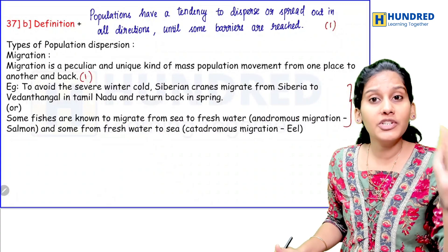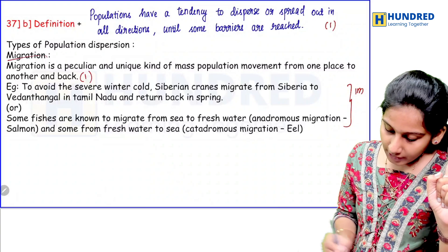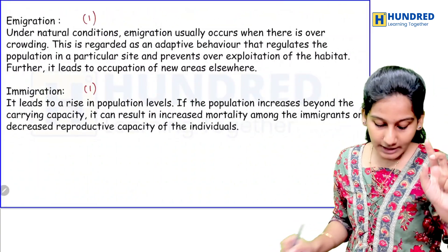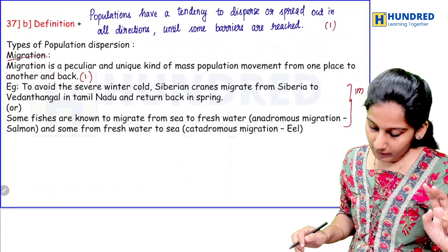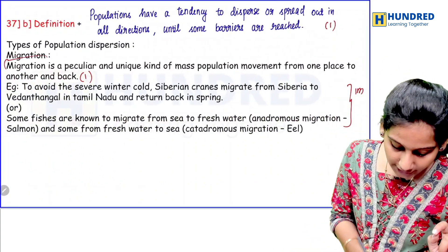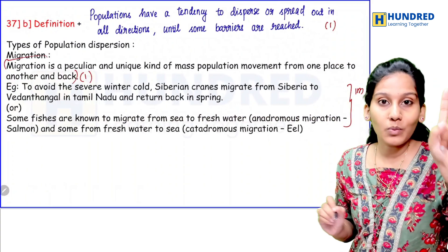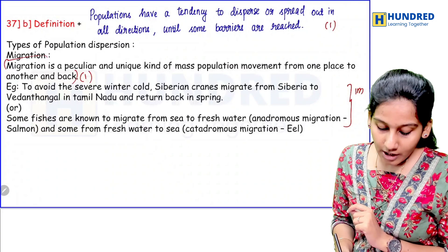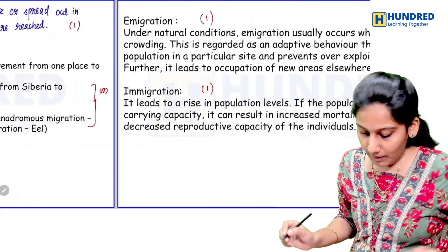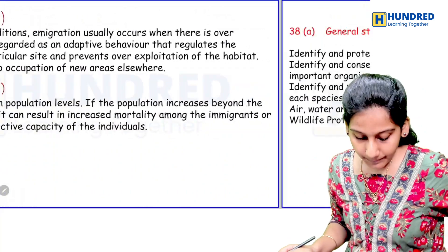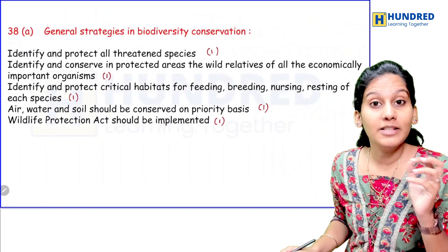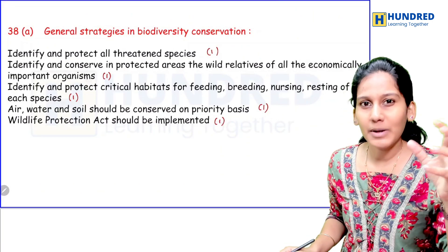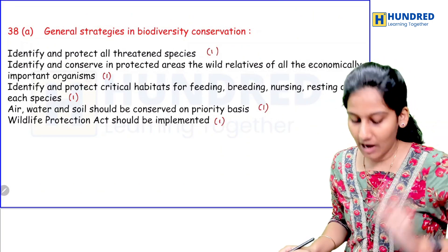Population, dispersion — definition and migration, one mark each. Immigration one mark, emigration one mark. The definition itself carries one mark. Migration together is two marks. General strategies for biodiversity conservation is easy — at least read it once for one mark.